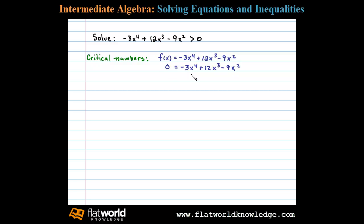In this case, we notice there's a GCF. The GCF is 3x². We could solve this by factoring. Let's go ahead and factor out negative 3x². Doing that, we'll be left with x² - 4x + 3.